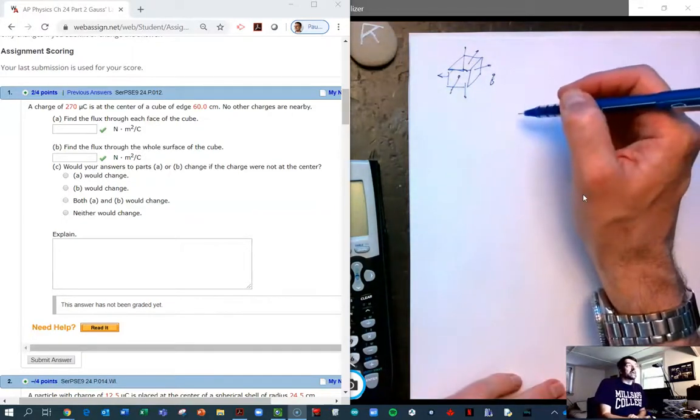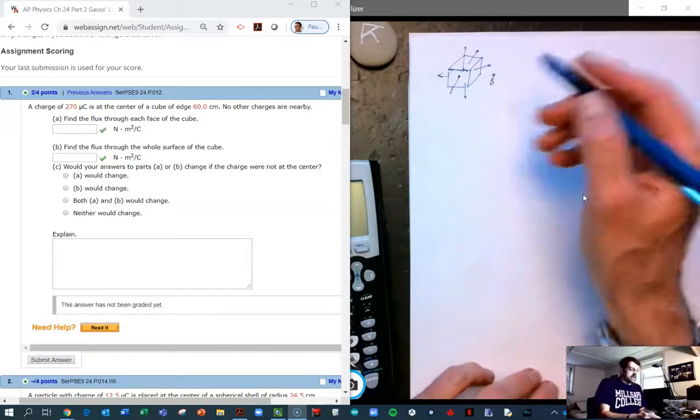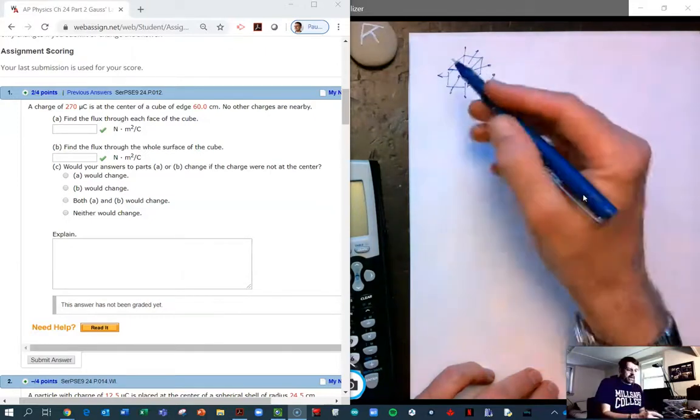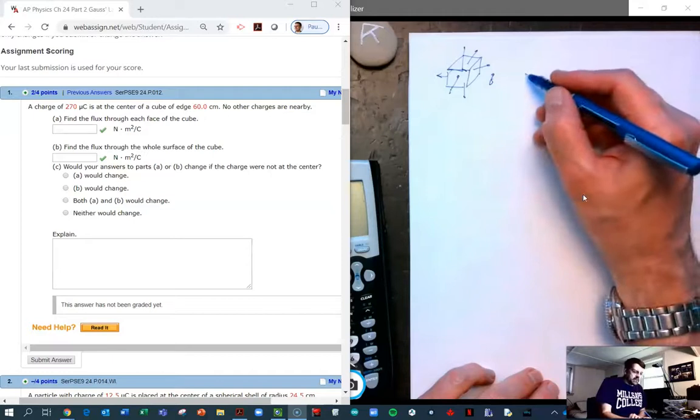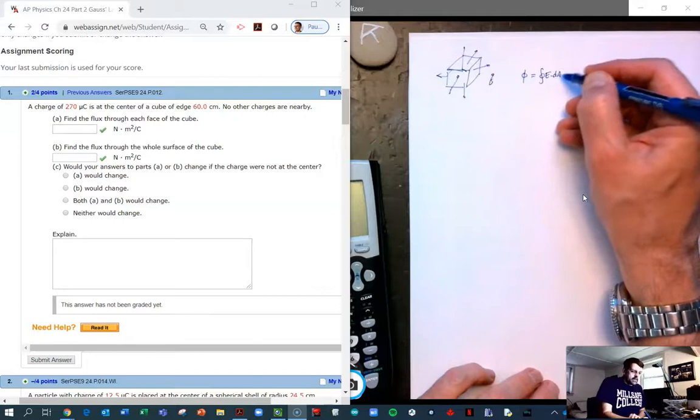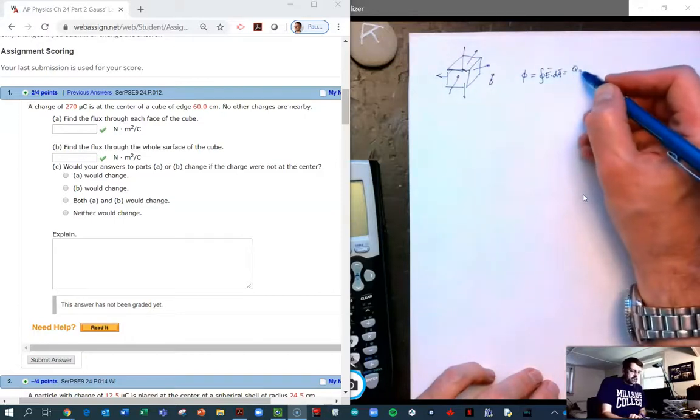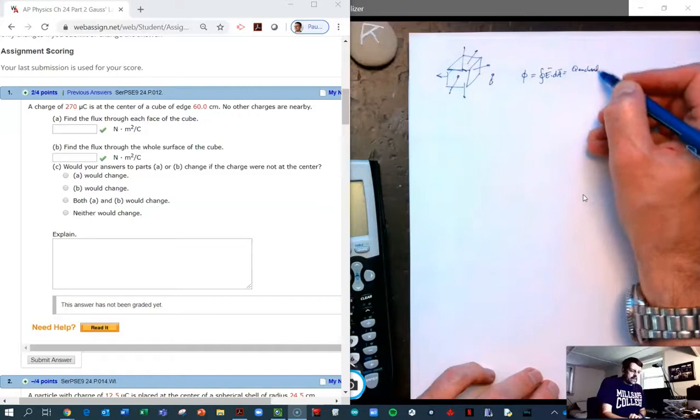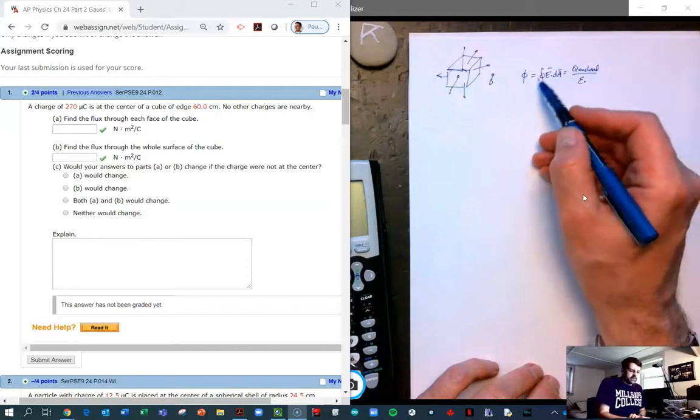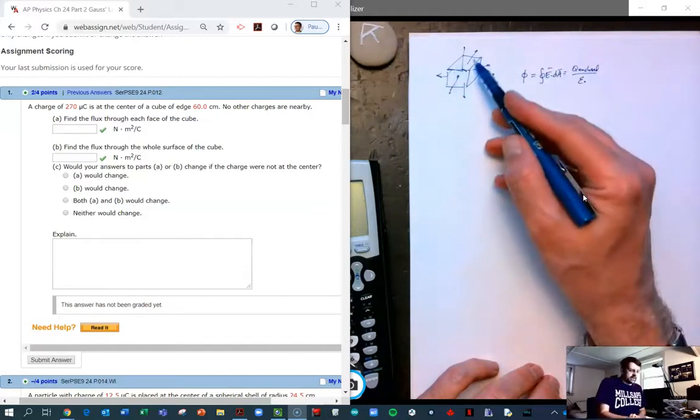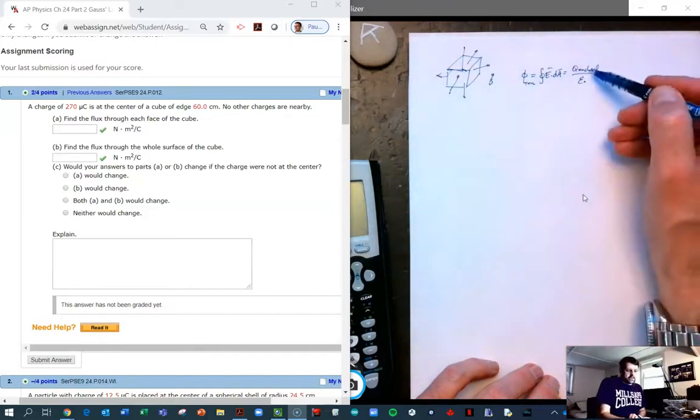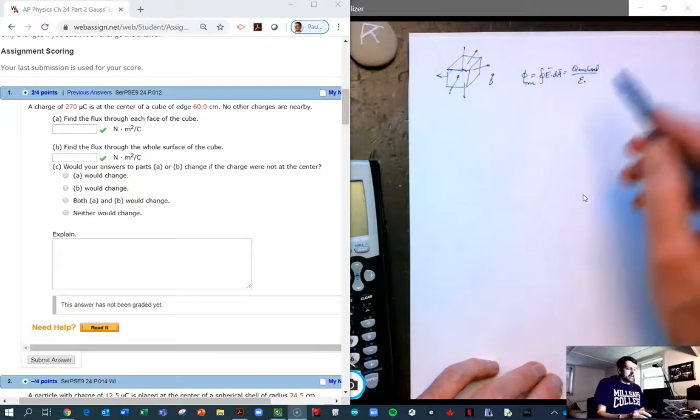I'm going to answer B first because that's the easiest and most logical one to find. Basically, what we're looking for is the flux through the entire cube. So if we imagine that this cube is our Gaussian surface, then simply the flux is equal to Q enclosed in that surface, Gaussian surface, divided by epsilon naught. And so really, we don't even have to worry about the integration or the flux through any of the sides. We're just looking for the total flux, which is going to be the charge enclosed divided by epsilon naught.